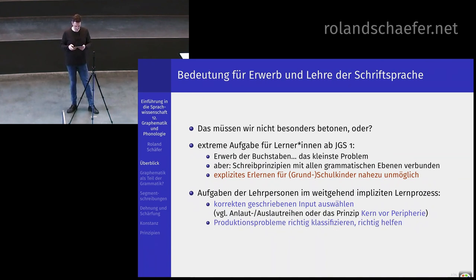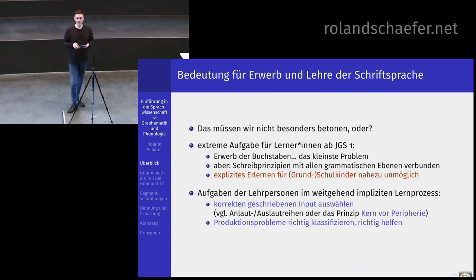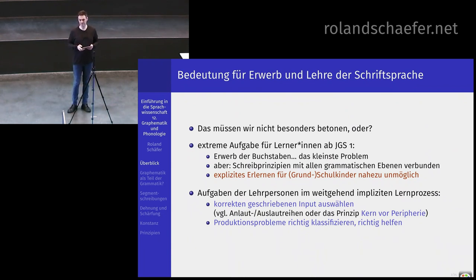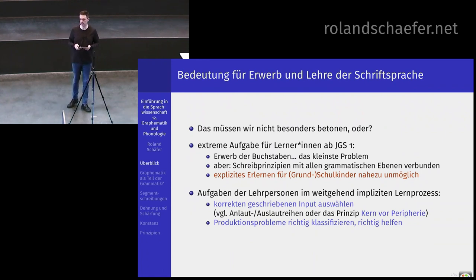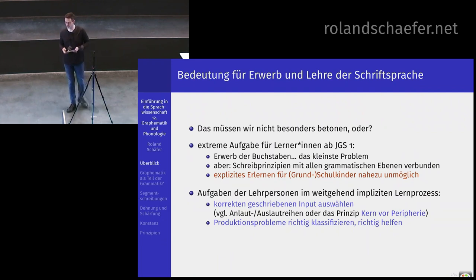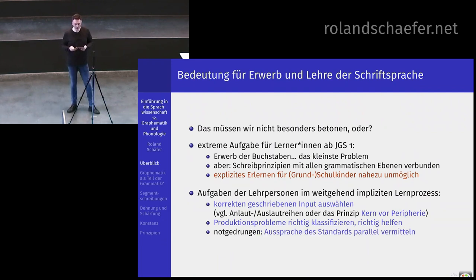Da gab es das Problem, dass ungünstige Beispiele ausgewählt waren. Es wurde gleich mit Nicht-Kern-Wortschatz begonnen, also Wörtern, die auf der zweiten Silbe betont sind. Das heißt, besprechen Sie erst den Kern des Systems. Außerdem müssen Sie Produktionsprobleme – also wenn ein Kind nicht richtig schreiben kann – richtig klassifizieren können, damit Sie richtig gegensteuern können. Und was Sie notgedrungen auch noch tun müssen: Sie müssen die Aussprache des Standards parallel mit der Schrift unterrichten.